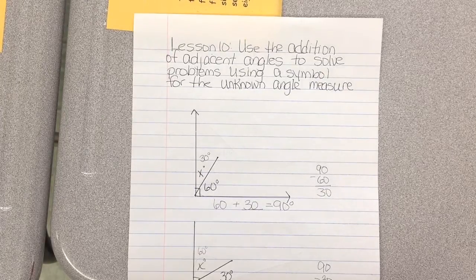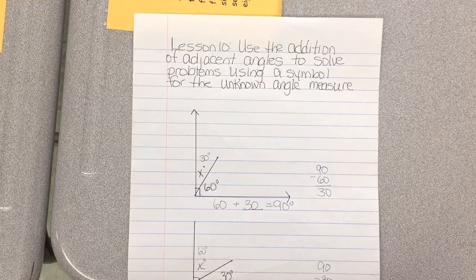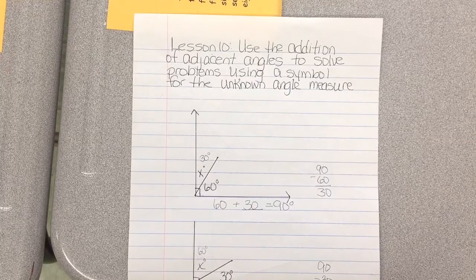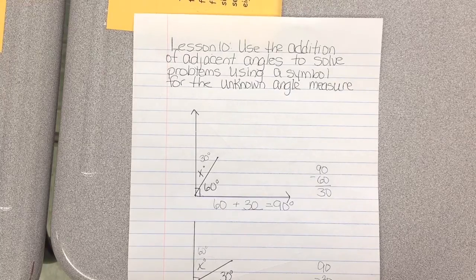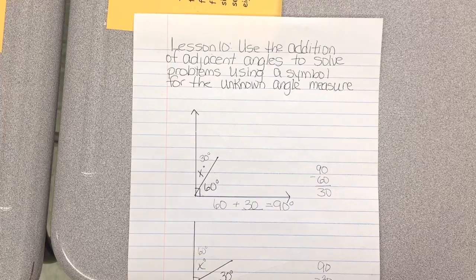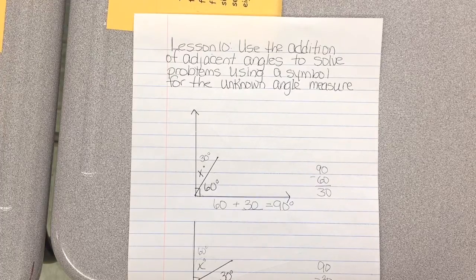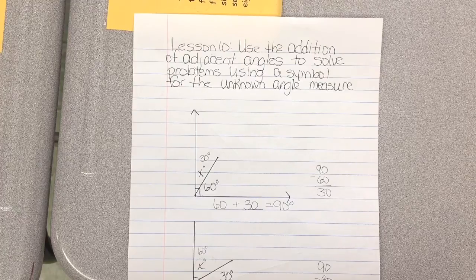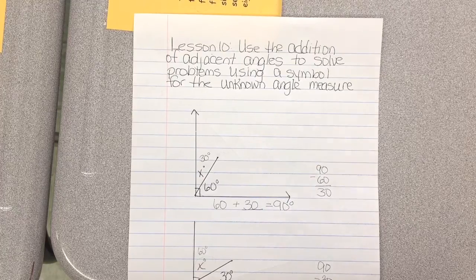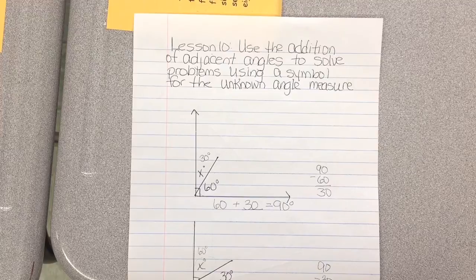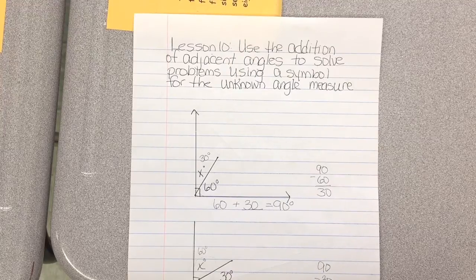Module 4 Lesson 10: Use the addition of adjacent angles to solve problems using a symbol for the unknown angle measure. In other words, we're going to look at an entire angle and just part of it, the piece next to the unknown angle. You also need to use your knowledge of benchmark angles, 90 and 180 in particular.